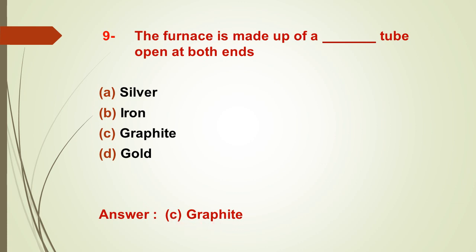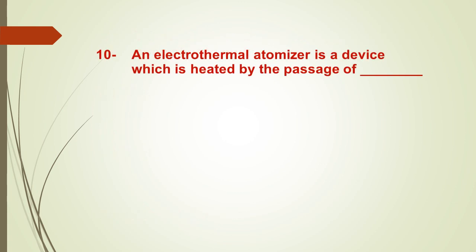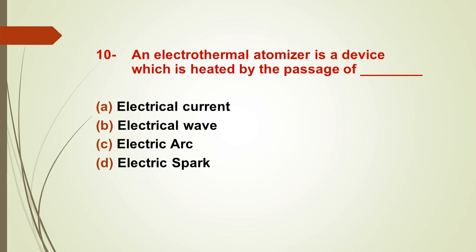Question number ten: an electrothermal atomizer is a device heated by the passage of dash — options: A) electrical current, B) electrical wave, C) electric arc, D) electric spark. The right answer is A — electrical current. The electrothermal atomizer is heated by the use of electrical current.